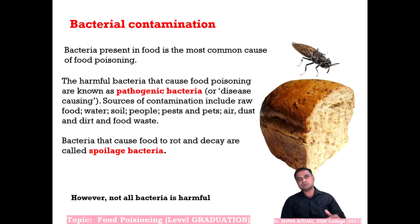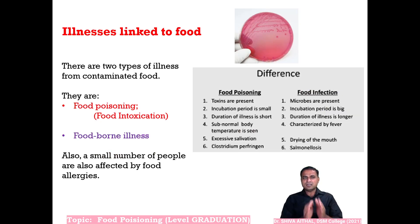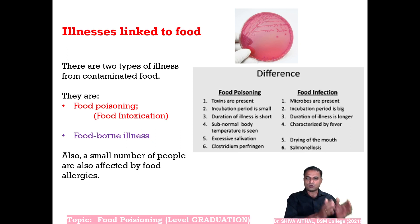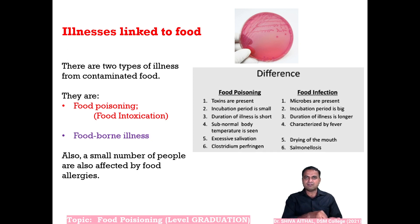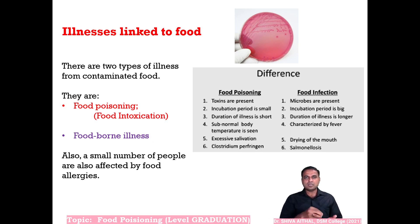Not all microorganisms are responsible for food poisoning — only pathogenic bacteria can cause it. There are two types of illness linked to food: food intoxication and food infection. Food intoxication is caused by toxins or metabolites secreted during bacterial growth — the bacteria itself is not directly responsible. Food infection is due to the large number of bacteria themselves growing inside the body.